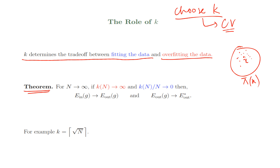Think about the intuition of this theorem before the mathematics. Let's say there is a test point X at a distance R from its k-th nearest neighbor. The fraction of all points that fall within this R of X is K over N, which by assumption is approaching zero as I have more and more data. As K over N approaches zero, that means R is also approaching zero. In very simple terms, the K nearest neighbors to X are approaching X - they're really overlapping X, coming really close.